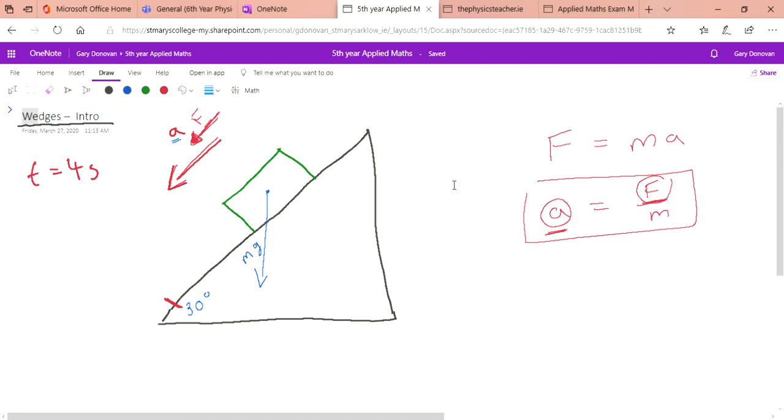We need to split up this gravitational force. What we usually do is say let's call this the x plane and this the y plane. We want to split this gravitational force into these two directions. When we do that we're splitting it into the force that's pulling the particle down into the wedge and the force that's parallel to the plane.